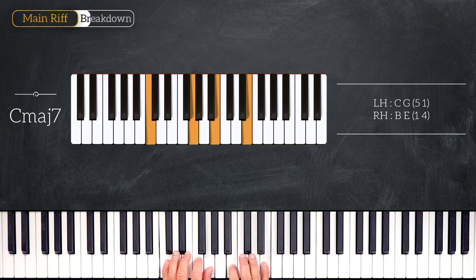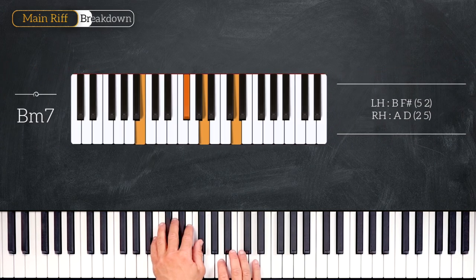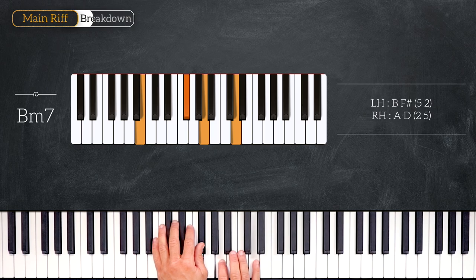And we'll finish this chord progression on a B minor 7, playing B, F sharp, A, D.